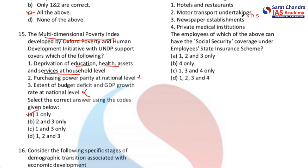The answer is only one — option A — because purchasing power parity at national level won't directly impact how someone is affected by poverty. If they don't have proper education, health, and other services, purchasing power parity alone can't help. So the answer is A.